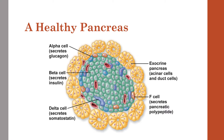We have to look at how a healthy pancreas works. A healthy pancreas has alpha cells which secrete glucagon, which is the antithesis to insulin. We have beta cells which secrete insulin. We're going to want to focus on that hormone, as it's going to be a large, important player in the pathology of type 1 diabetes.